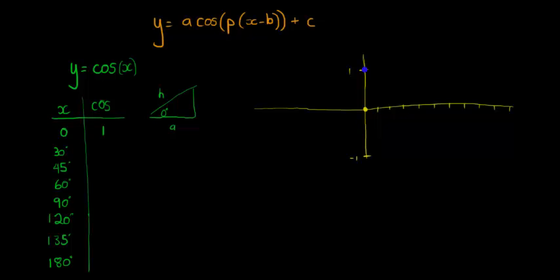Next up is 30 degrees. Cos of 30 degrees is, if that is 30 degrees, then this is square root 3 over 2, which is roughly equal to 0.87.